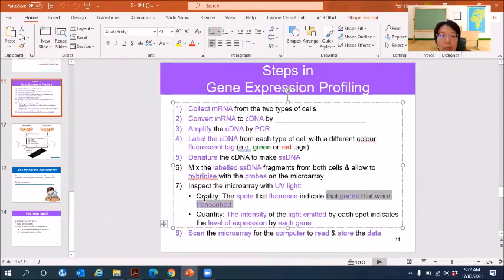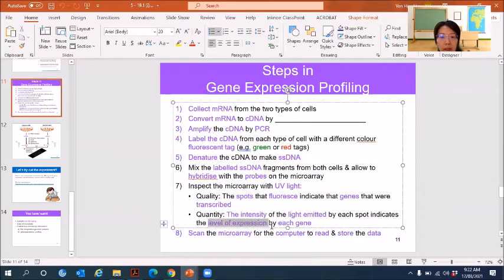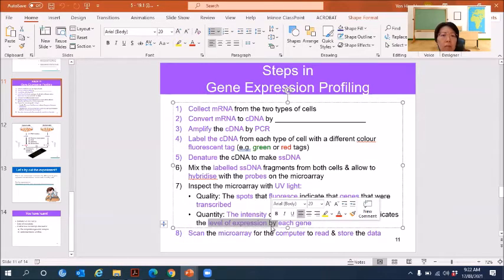So this is about the quality means present or absent. Quantity means you look at the intensity of the fluorescence. Intensity of the fluorescence will tell you the level of gene expression. So can you see that this passage here, all the points here are the marking point of that question.